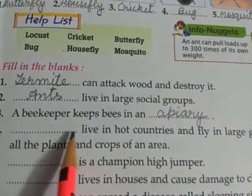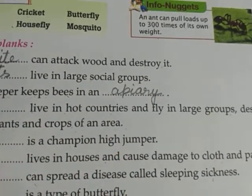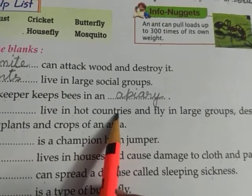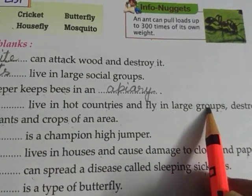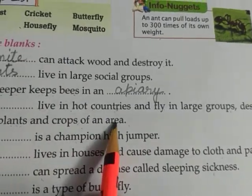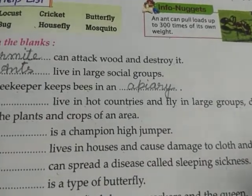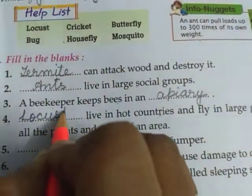Number four: they live in hot countries and fly in large groups, destroying all the plants and crops of an area. They live in hot countries where it is very warm, fly in huge swarms, and destroy all the plants and crops wherever they go. That is locust. L-O-C-U-S-T-S.